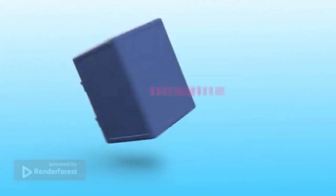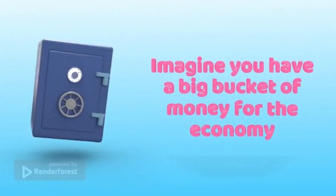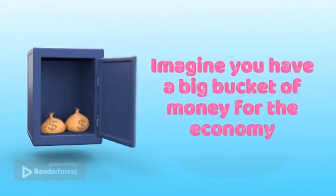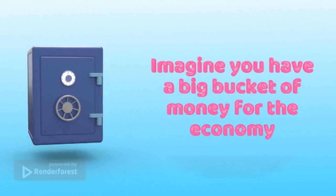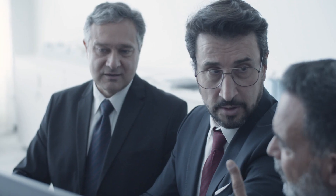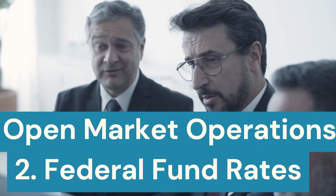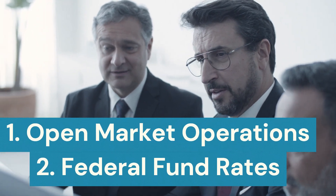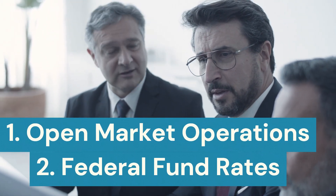Imagine you have a big bucket of money, and you want to make sure there's just the right amount of money in the bucket to keep the economy healthy and growing. That's what the Federal Reserve does. There are two main tools that the Federal Reserve uses to control the money supply and interest rates: open market operations and the federal funds rate.